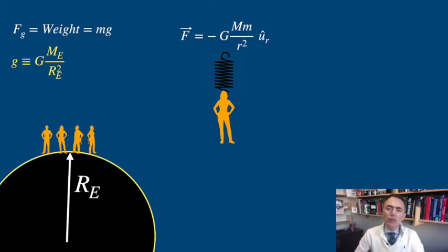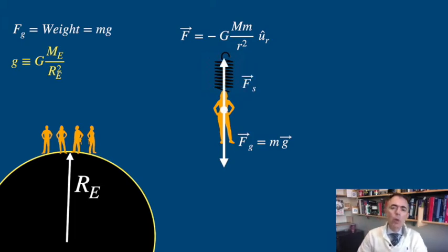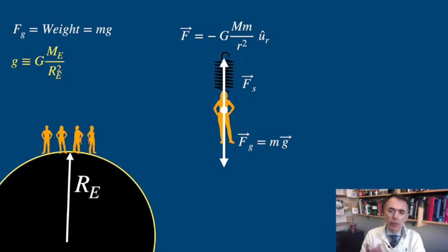You will experience two forces: one gravitational from the Earth pointing down, and an elastic one from the spring pointing up. This way you are in balance, you do not accelerate, and both forces should be equal. So the force experienced by the spring is the same as your weight.